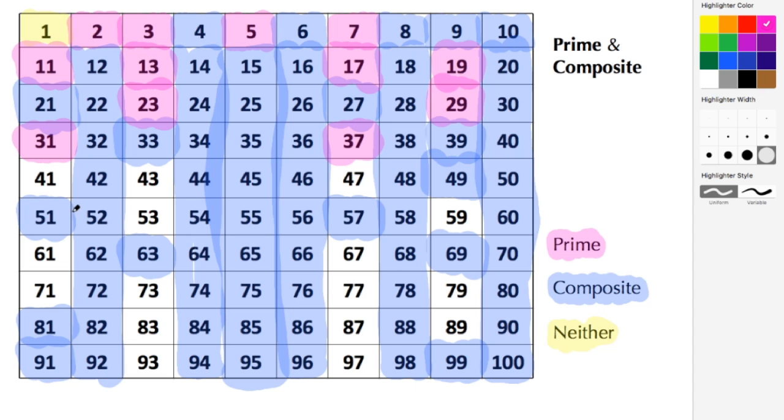The better you know your times tables, the easier it is to go through and select these, to know which are prime and composite. 41 is prime, 43 is prime, 47 is prime, 53 is prime, 59 is also prime, 61 is prime, 67 is prime, 71 is prime, 73 is also prime.